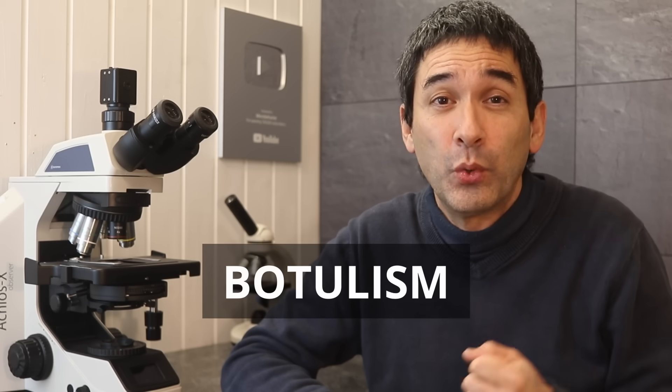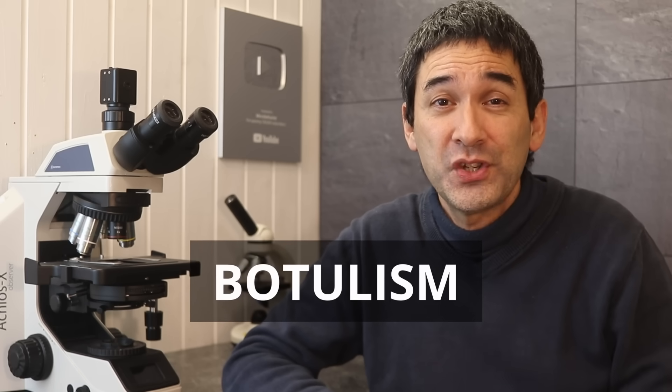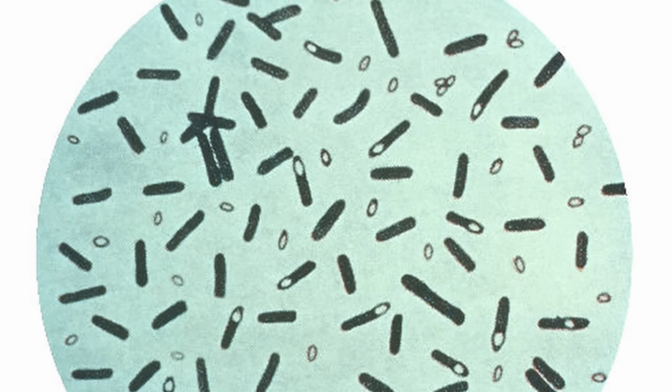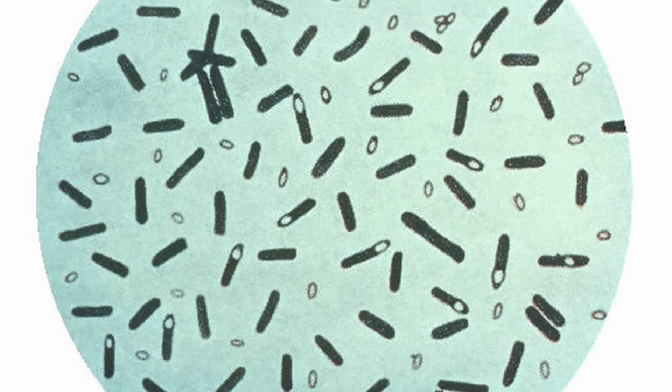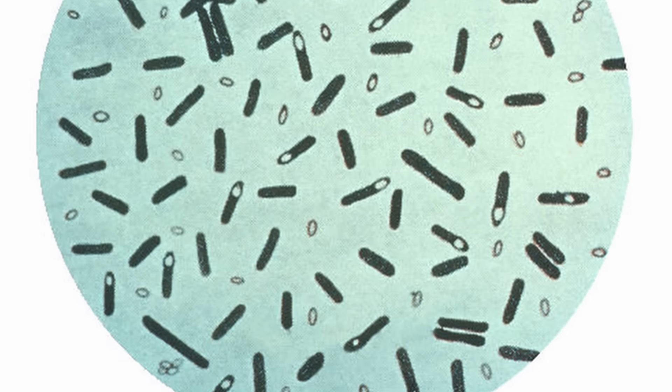However, honey also has a dark side, unfortunately, because it's not 100% safe for everyone. It can contain botulism spores. These are bacterial spores. And for adults, our digestive system is strong enough to handle them. But infants under one year of age, these spores can be a problem because they can start to germinate and grow and they release a toxin. And that's why you should never give honey to babies because it's simply too risky.